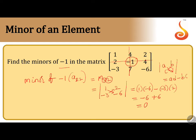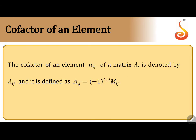Next, cofactor of an element. The cofactor of an element Aij of a matrix A is denoted by capital Aij and is defined as: Aij equals minus 1 to the power i plus j, into Mij. Mij is the minor of element Aij, which we just discussed.